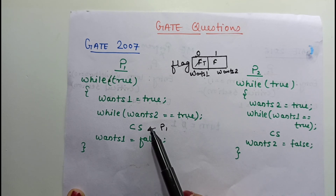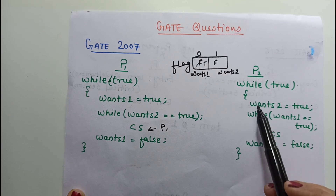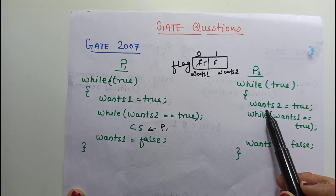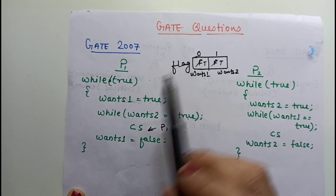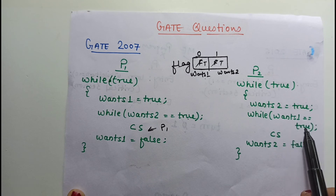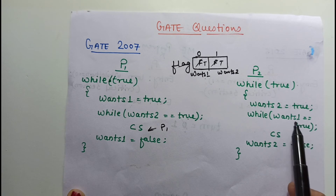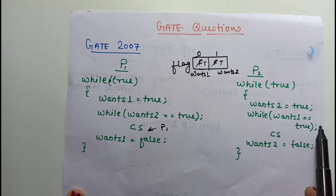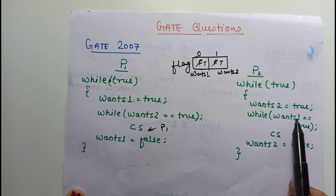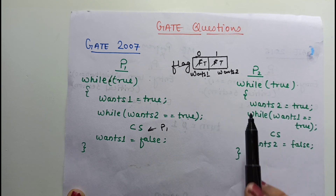Now consider that process P2 also wants to execute its critical section. P2 sets wants2 to true, then checks the while loop: while wants1 is true, wait. Since wants1 is true, P2 will wait here until wants1 becomes false. So P2 is blocked while P1 is in the critical section — mutual exclusion is satisfied.